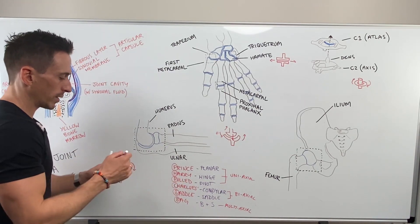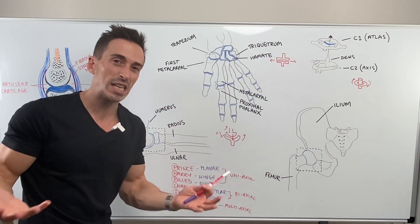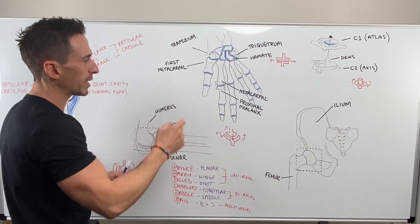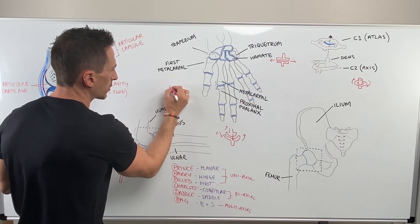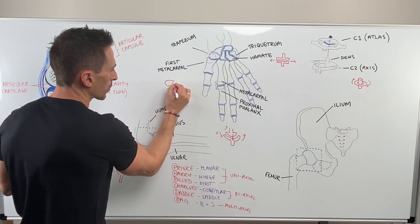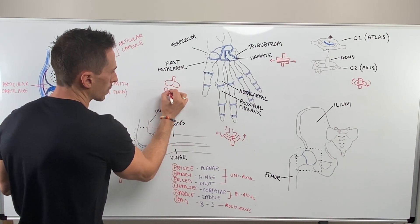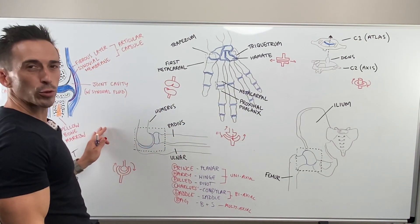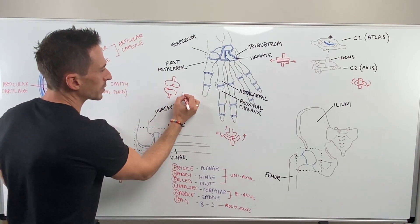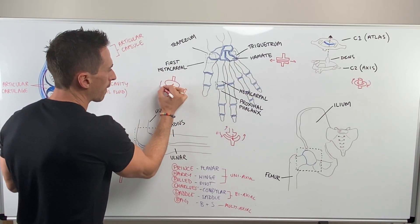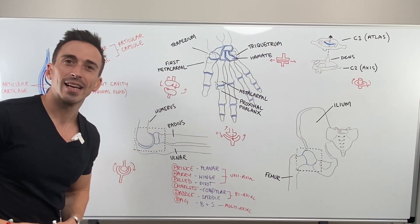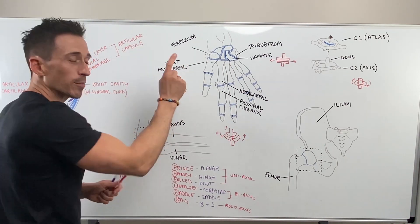Then we move to the saddle joint, which is like sitting on a saddle. An example of a saddle joint is the trapezium and the first metacarpal. The two surfaces can move in two different axes — it's a biaxial joint. Again, the example is the trapezium and the first metacarpal.